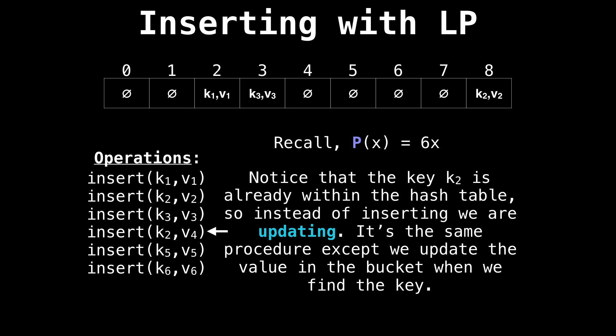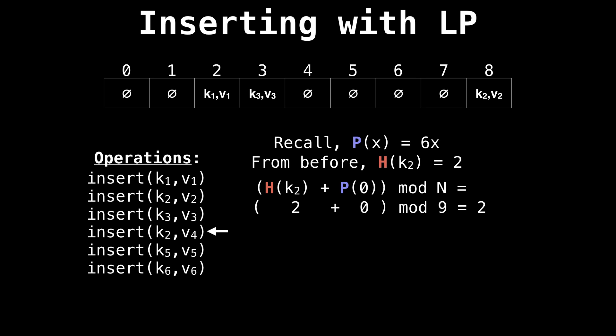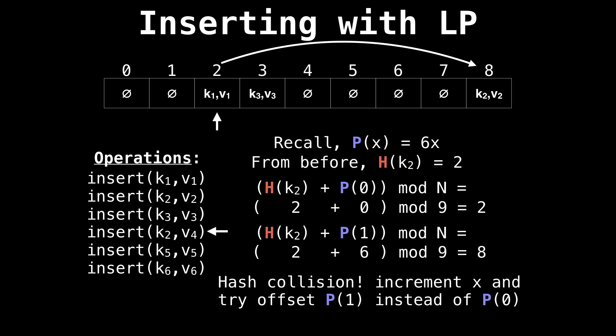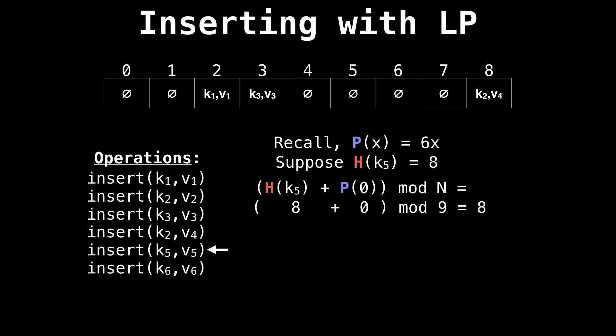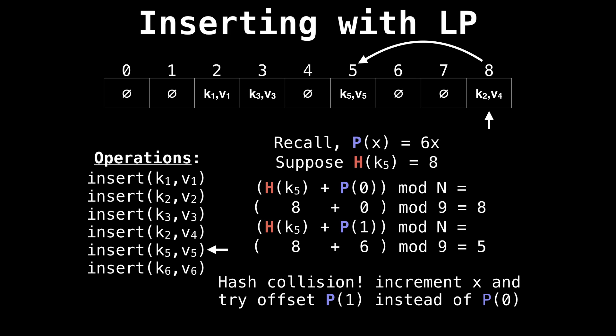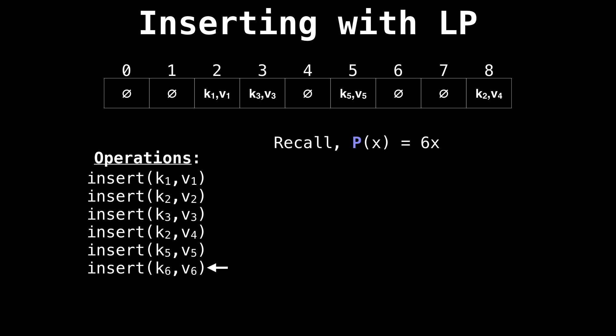Notice that we're trying to reinsert k2, which already exists within our hash table. So instead of inserting it, we're actually going to be updating its value. We know that the hash value for k2 is two, so we look at position two and k2 is not there. There's a hash collision, so we increment x, offset by P(1), and now we're able to find k2 and update the value right there. Let's go to k5. Suppose k5 has a hash value of eight. Eight is taken, so we're going to probe, and that leads us to index five. So we're going to insert the key value pair there. Now let's try to insert k6.